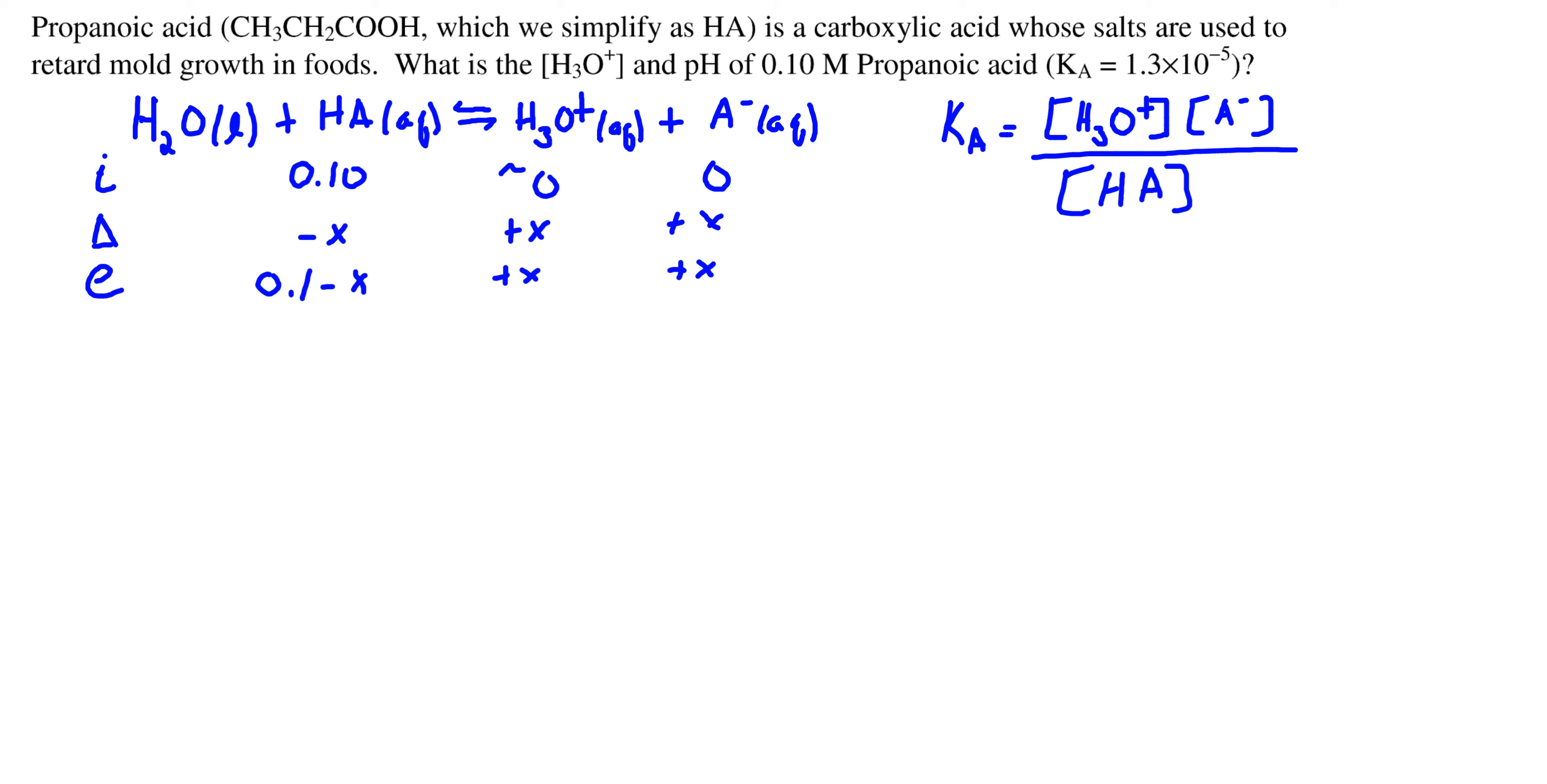We have an initial concentration of 0.1 molar propanoic acid, and some of that will react with water. That same amount is going to be producing H3O+ and our conjugate base.